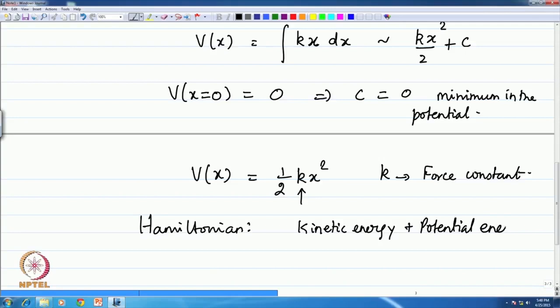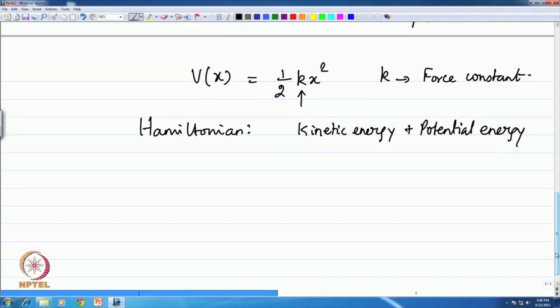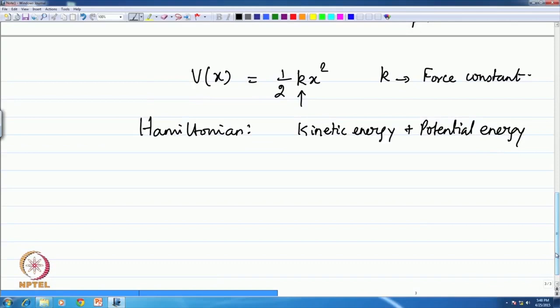And the potential energy is already given here. The kinetic energy is half m v square or if you want to write it using momenta it is p square by 2 m. Therefore, the Hamiltonian in a classical sense is p square by 2 m plus half k x square, where m is the mass of the oscillator.